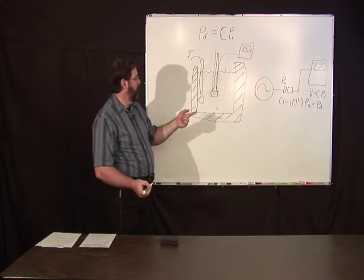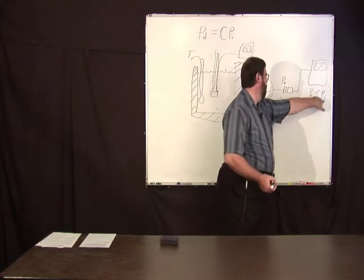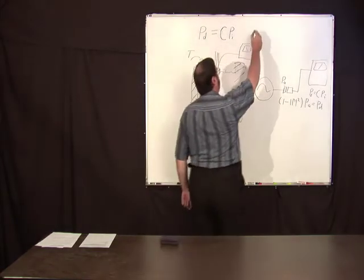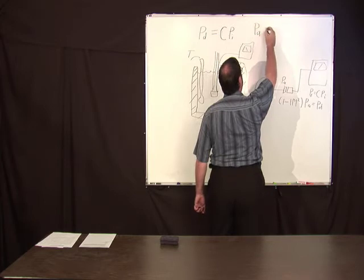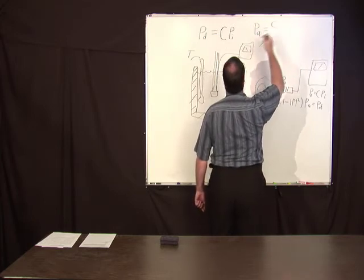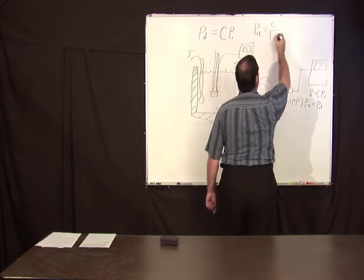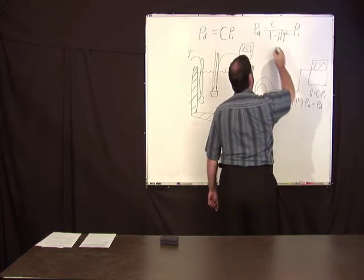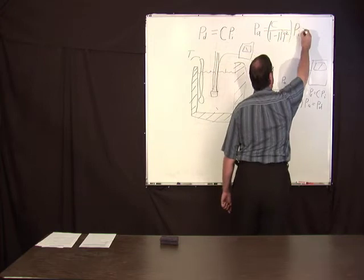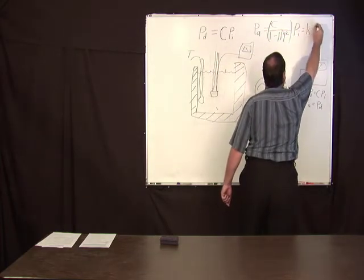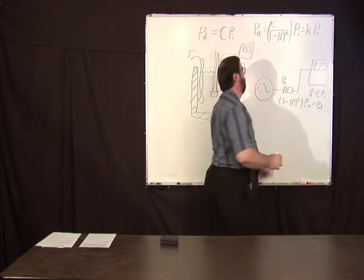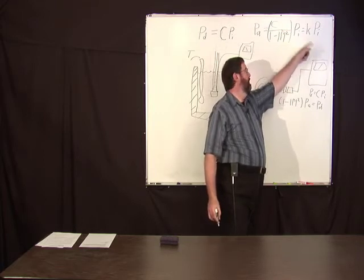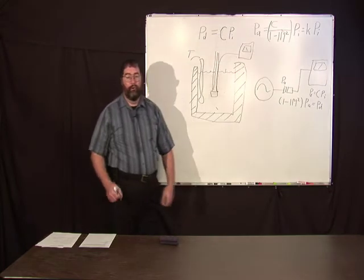The power actually delivered to the power sensor is going to be 1 minus gamma reflection coefficient squared times the available power. That's equal to the power delivered. So the available power equals this constant we got from calorimetry divided by 1 minus the reflection coefficient squared times the indicated power. This thing here, we'll just call that K.